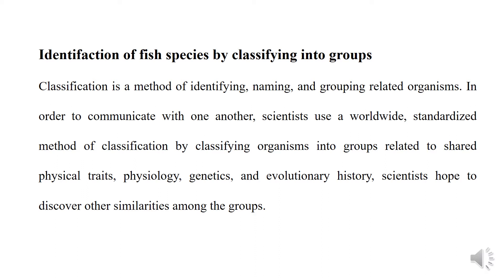The question is: how are organism species identified? Organism species are identified by classification. Classification is important because it facilitates the identification of organisms. Classification helps to establish the relationship among various groups of organisms and helps to study the phylogeny and evolutionary history of organisms.